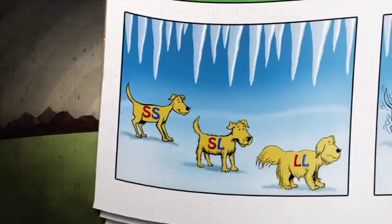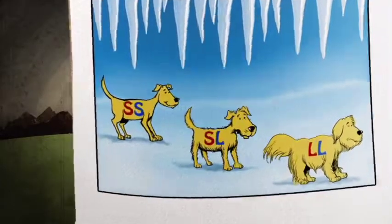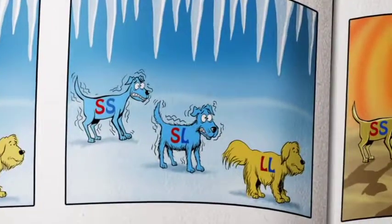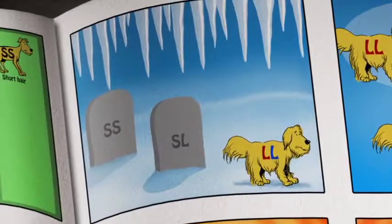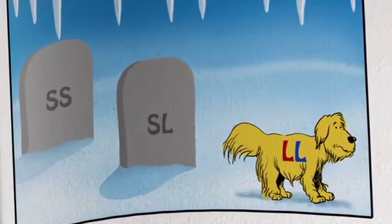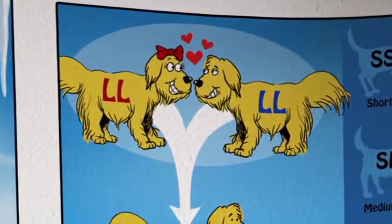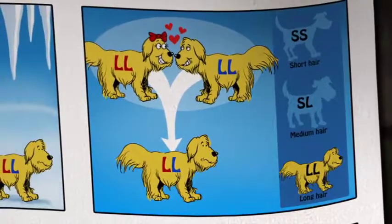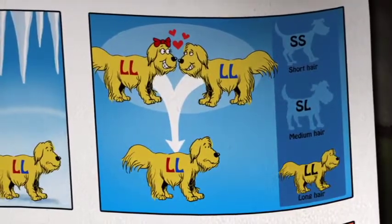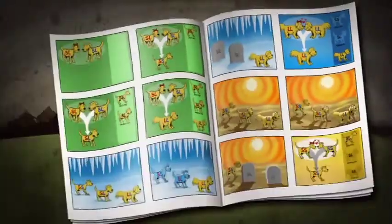Now, the dogs move towards a cold climate. Those that have short hair and medium hair get cold and they die. And now you're only left with dogs that have L genes, who on their own will only ever produce dogs with L genes. They can never produce short hair or medium hair again. You form a different species of dog — that's a long-haired dog.